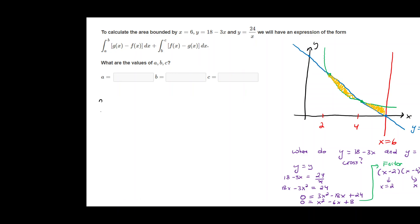And we're going to do an integral from a, the lower bound, from 2 to 4 of the top curve, which is the line, 18 minus 3x, and then minus the bottom curve, which is the hyperbola, 24 over x.